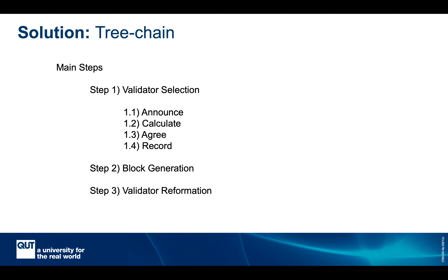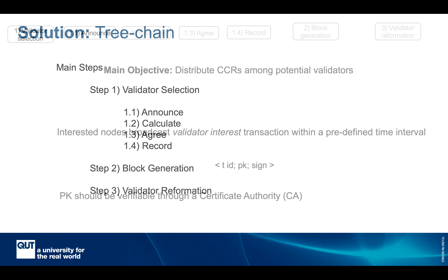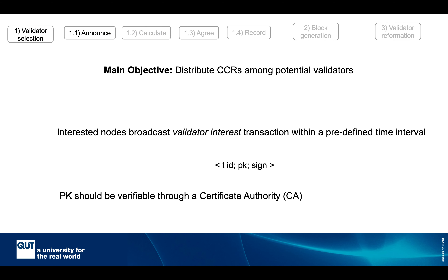Tree-Chain involves three main steps: validator selection, block generation, and validator reformation, which I'll explain in the rest of the presentation. The main objective of the validator selection step is to distribute CCRs among the potential validators — that is, to define who is responsible for which pattern.